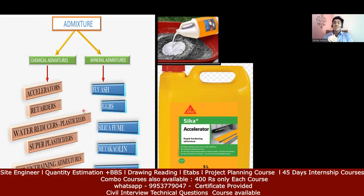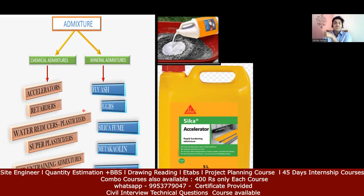Coming to accelerators — an accelerator will increase the setting of your cement. For example, if you're doing concreting in a very cold environment, your concrete is not going to set quickly since the environment itself is very cold. So we make use of accelerators so that whatever reaction is supposed to happen quickly, it does happen. In cold climate regions where there isn't enough sunlight, the concrete will not set — in that case we can make use of accelerators so that the fast setting of the concrete can happen.